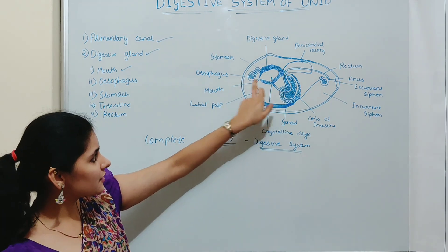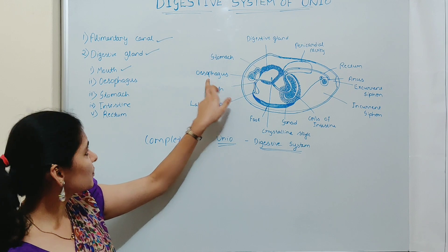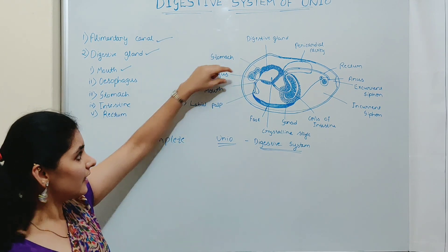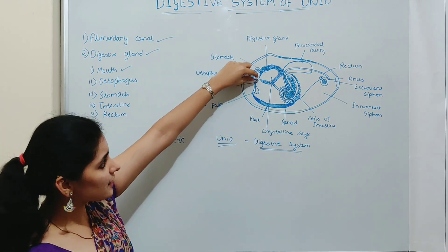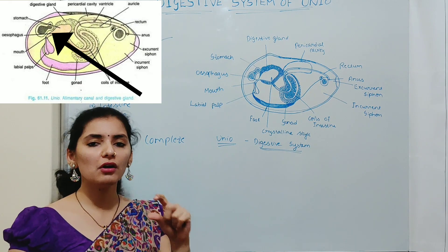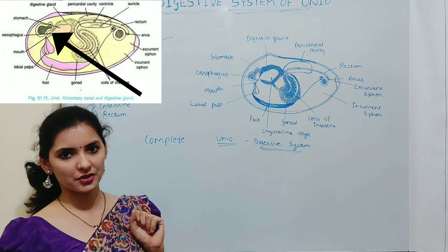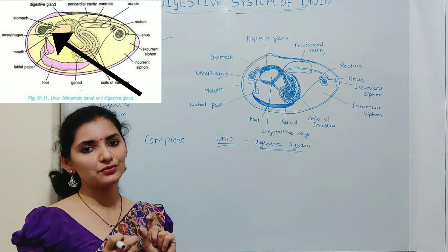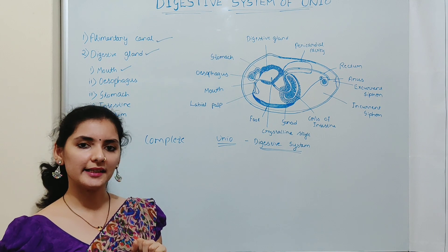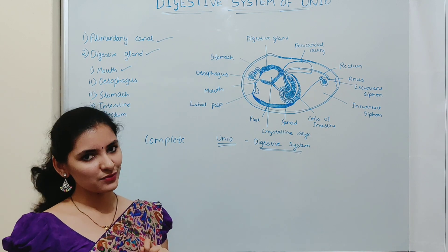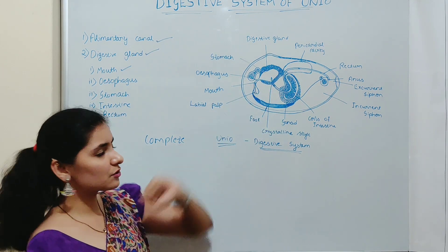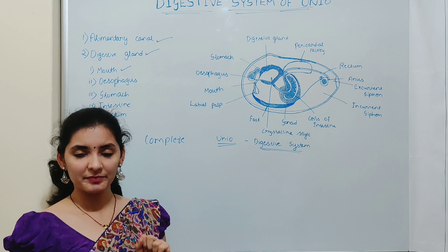The mouth leads to the esophagus, which is the second part of the alimentary canal. The esophagus in the case of Unio is a short tubular structure, and its inner lining is ciliated. The esophagus leads to the stomach.